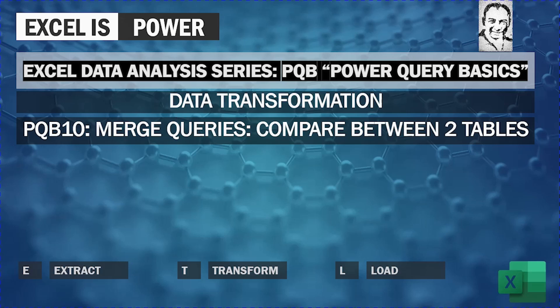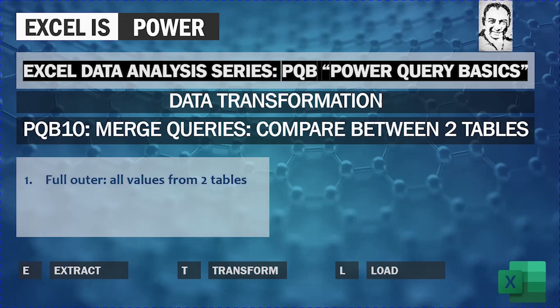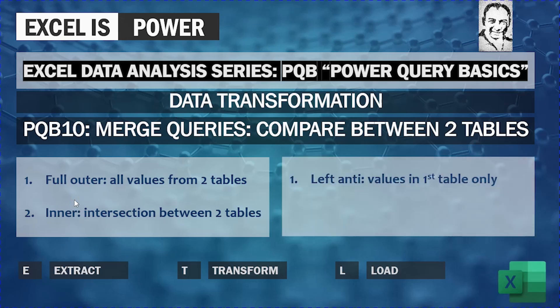We are going to use different join types. The first join type is full outer, which will help us to bring all the values from two tables. Then we'll look at the inner join type, which brings the intersection between two tables. We'll also look at left anti, when we want values in the first table only, and finally right anti, when we want data from the second table only.